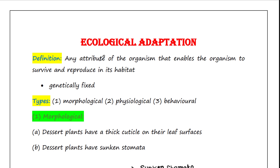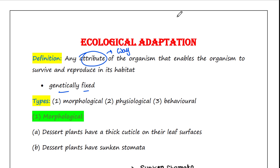Adaptation is any attribute of the organism that enables it to survive and reproduce in its habitat. It is any way that an organism can apply to survive well in harsh conditions. Adaptations are generally genetically fixed, meaning an organism is born with it. We don't teach a baby how to adapt to cold temperature — he or she is capable of bearing it; hence it is genetically fixed.